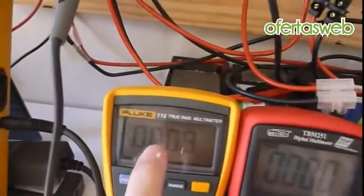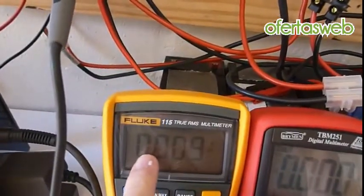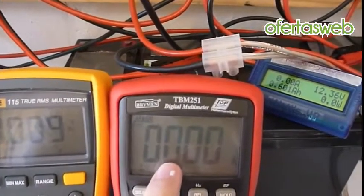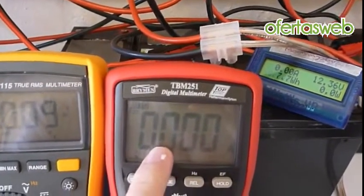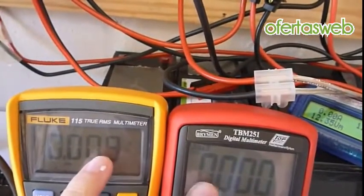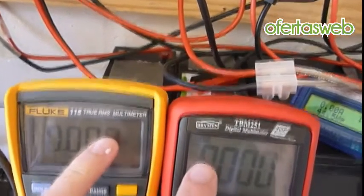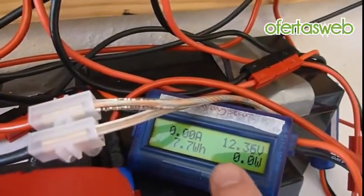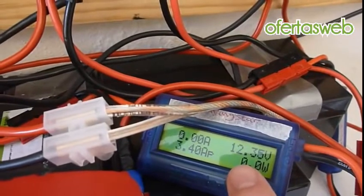I've got two multimeters. The Fluke is actually monitoring the input voltage. This Brymen is measuring the input current that in theory is coming in from the power supply which will be altered by the MPPT algorithm.